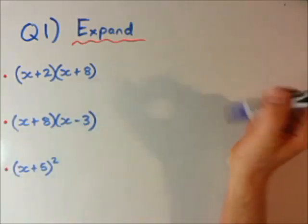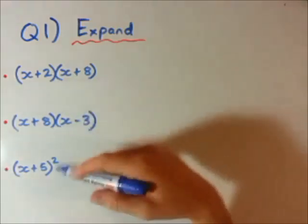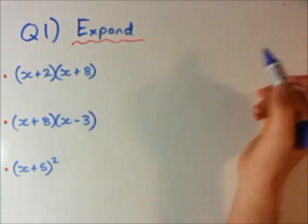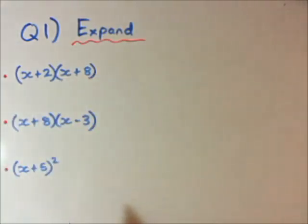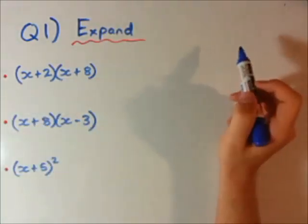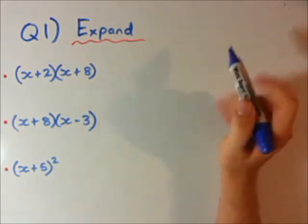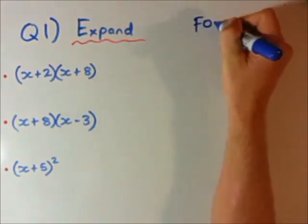I'm just going to go through, you might have done this before, I'm going to go through and show you how I would go about expanding these quadratics. Okay, so the first one here, we've got two brackets with two terms. We're going to do a method called FOIL, which stands for FOIL, first...